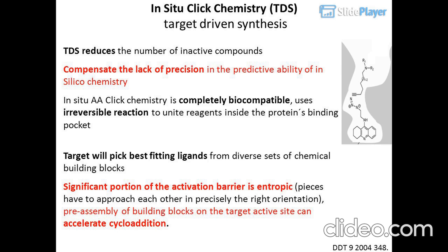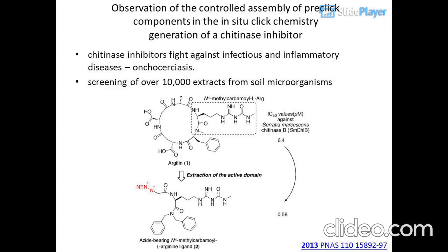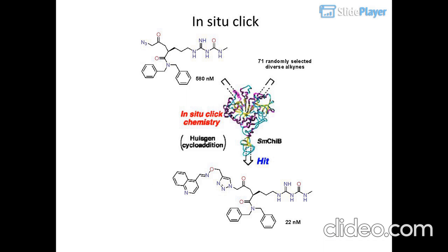Reference: DDT 9, 2004, 348. Observation of the controlled assembly of pre-click components in the in situ click chemistry generation of a chitinase inhibitor. Chitinase inhibitors fight against infectious and inflammatory diseases such as onchocerciasis. Screening of over 10,000 extracts from soil microorganisms. Reference: 2013 TNS 110, 15892–97.